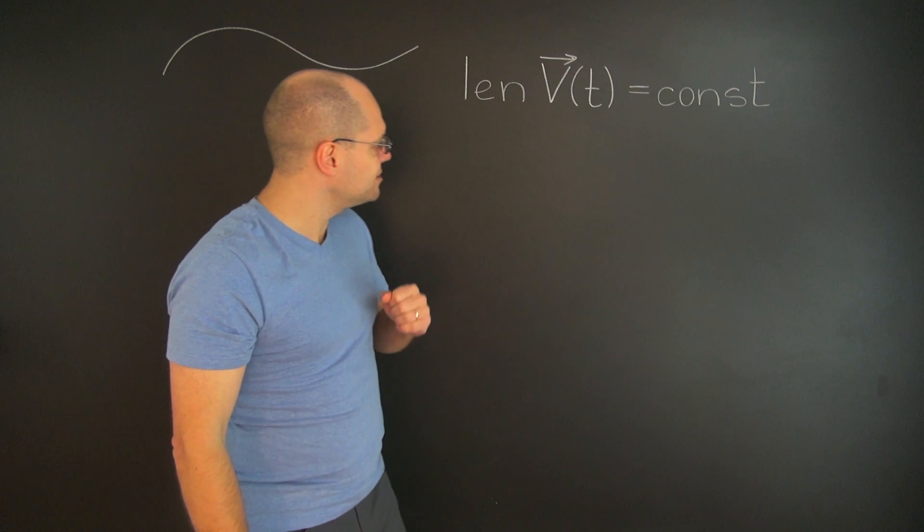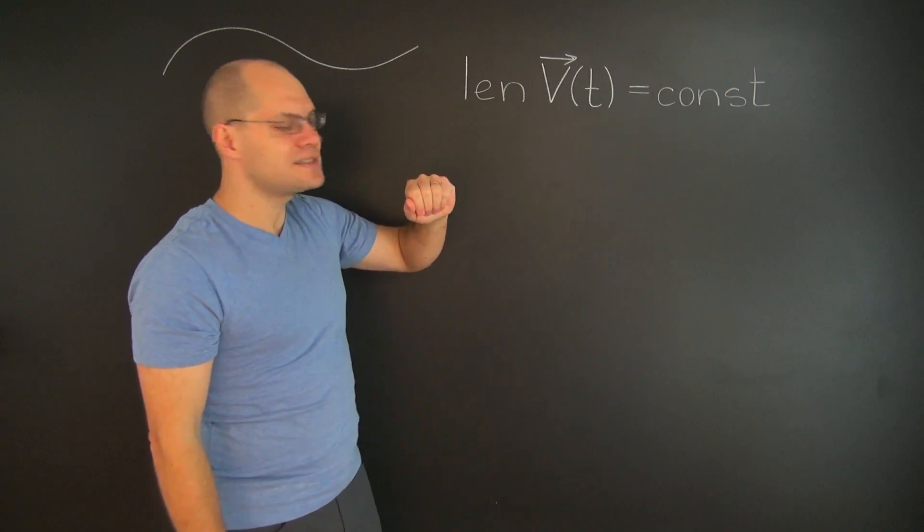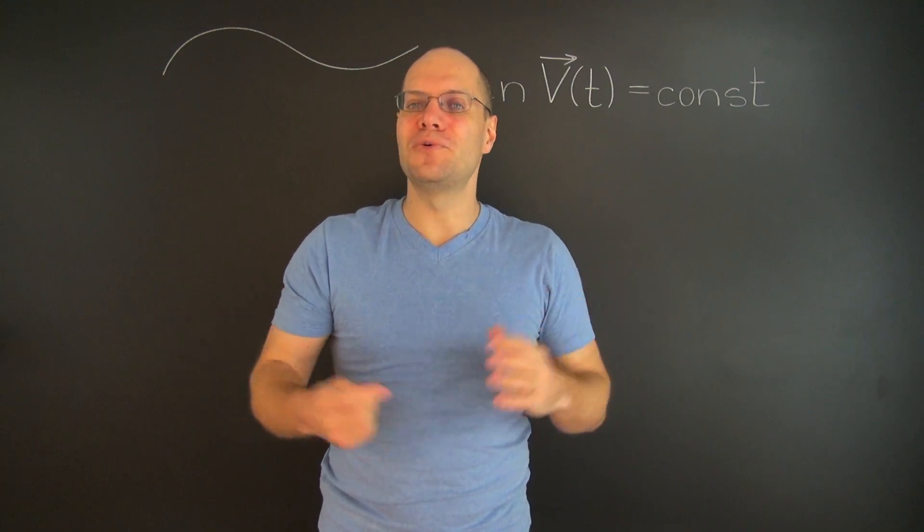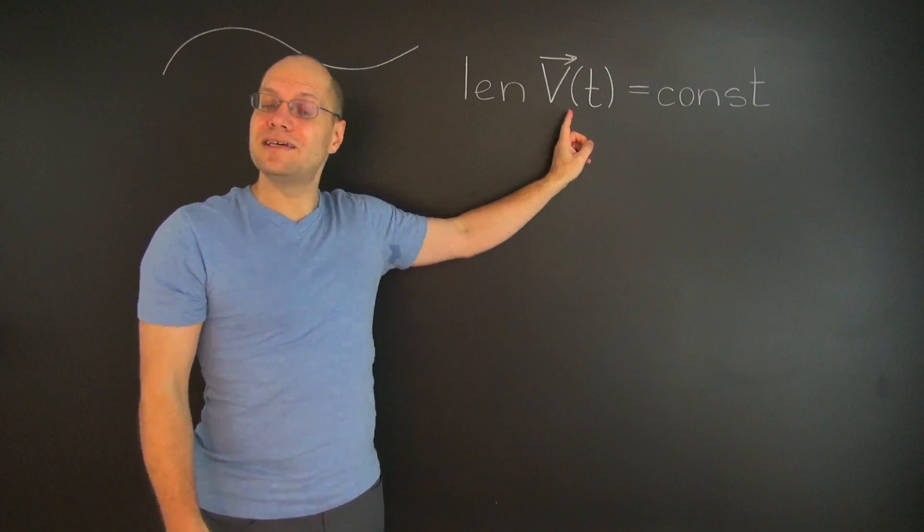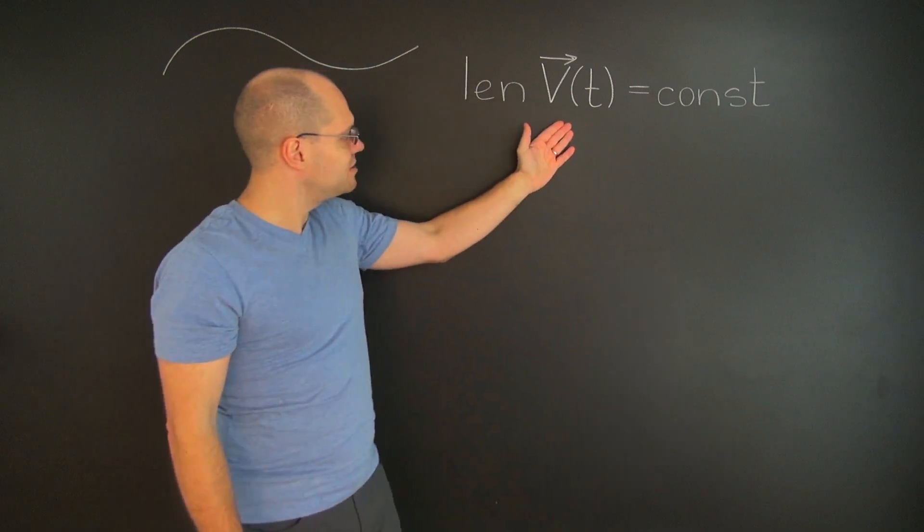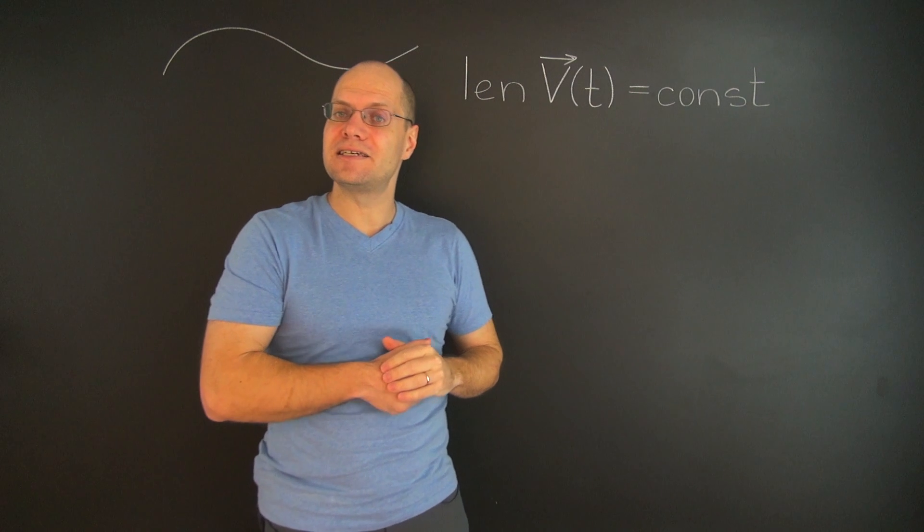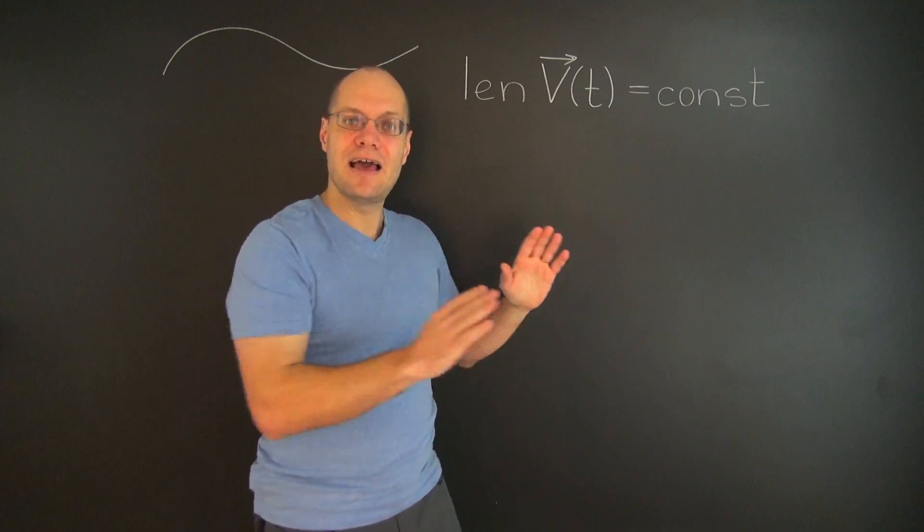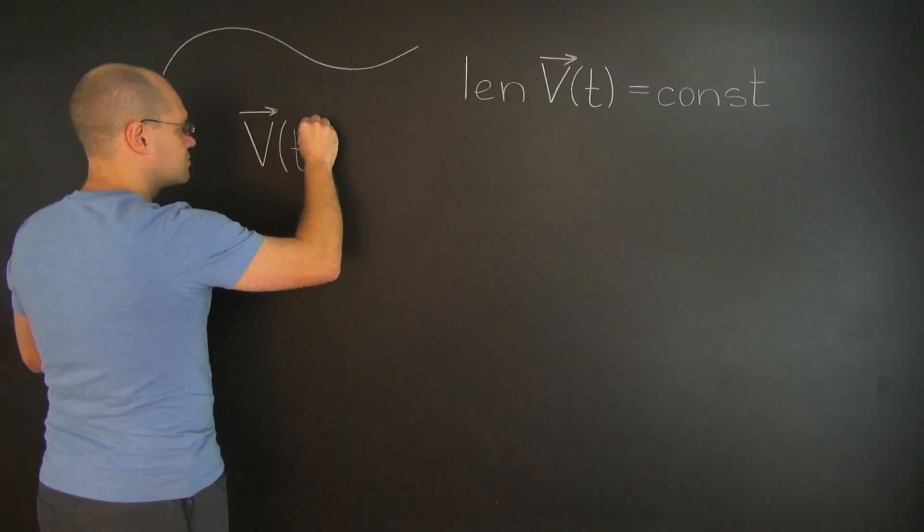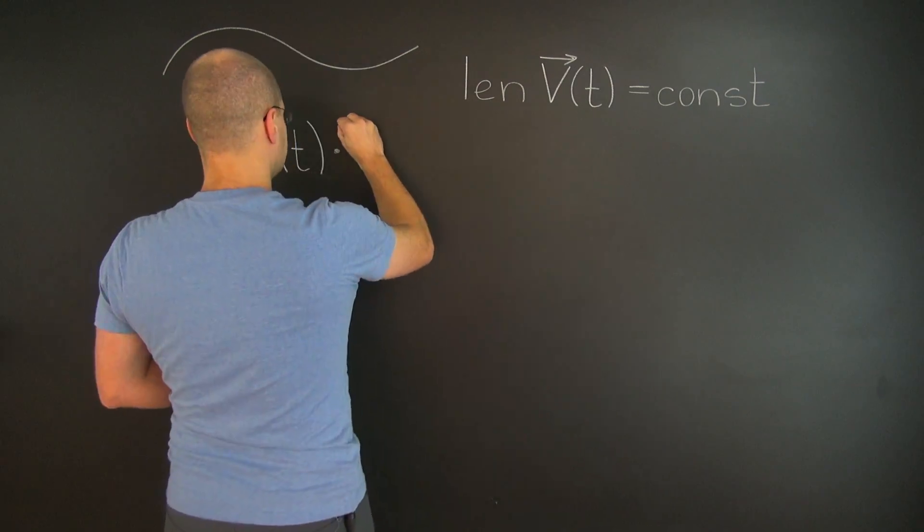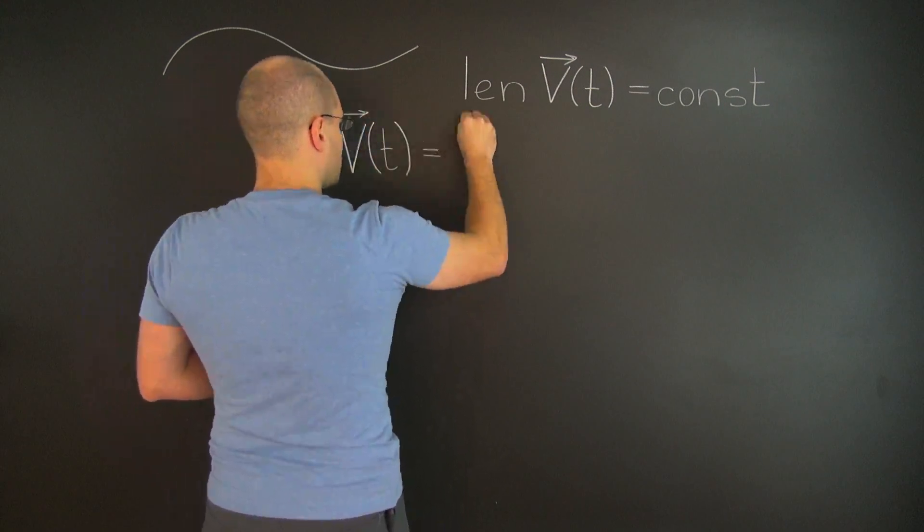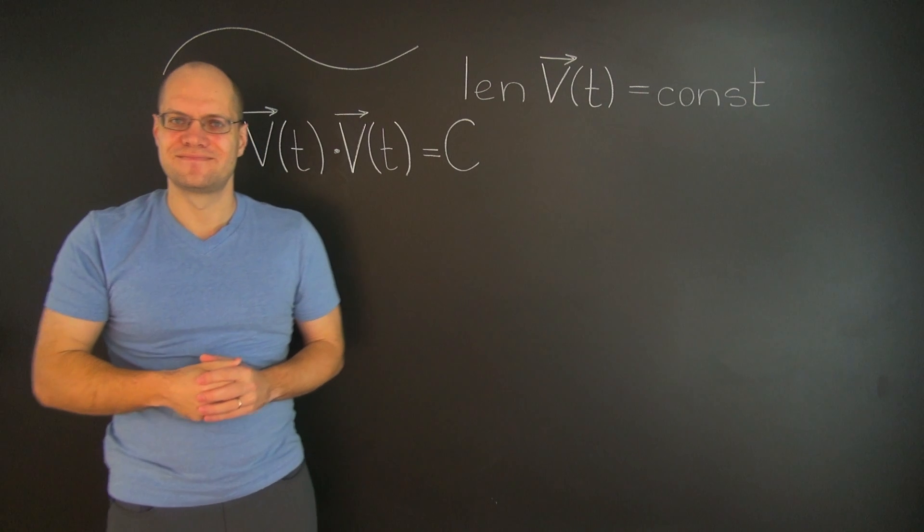Alright, so how do we paraphrase this fact that the length of V is constant in terms of the dot product? Well, of course all we need to say is that the dot product of V with itself is a constant. That's the length squared of V, and if the length of V is constant, then the length squared of V is constant as well. We'll call that constant C, and it will help us avoid square roots.